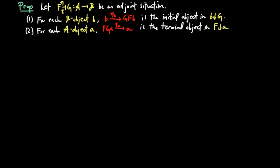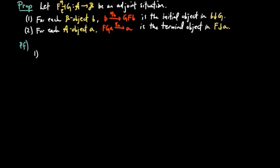We now come to the main result of this section. Let F, G be in an adjoint situation. Then: one, for each B object B, eta_B is the initial object in B over G; and two, for each A object A, epsilon_A is the terminal object in F over A.